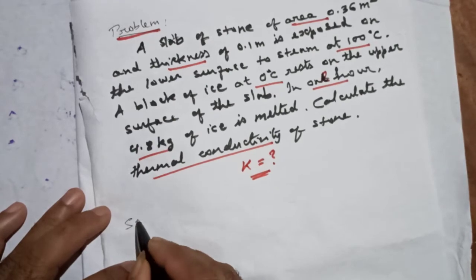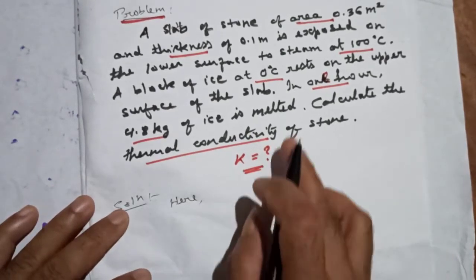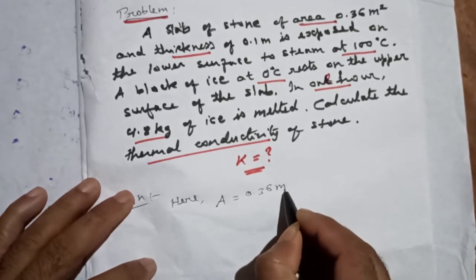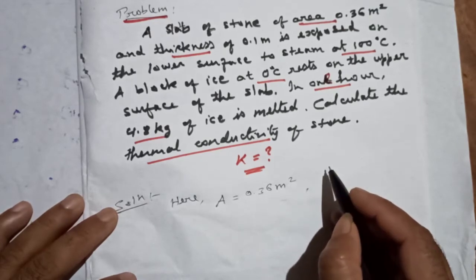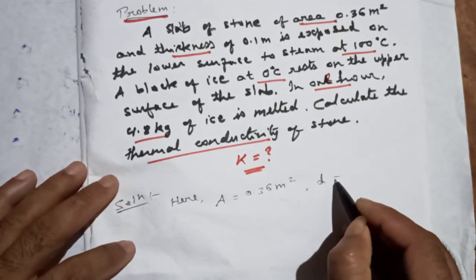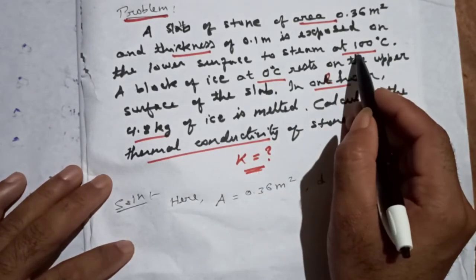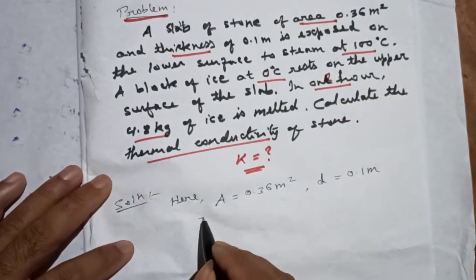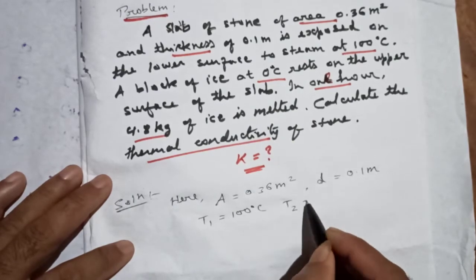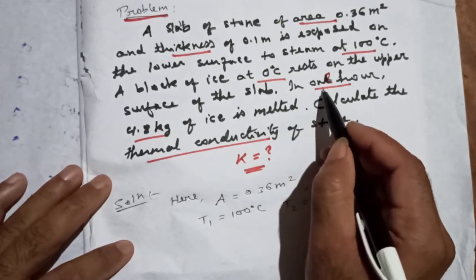Here we have: area A is 0.36 meters square. Thickness, denoted as small d, is equal to 0.1 meter. Temperature: the higher temperature T1 is 100 degrees centigrade, and the lower temperature T2 is equal to 0 degrees centigrade.